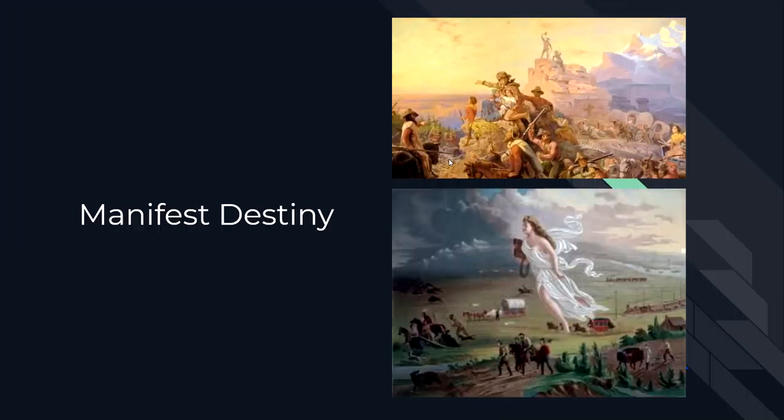Let's start with Manifest Destiny. This is a term that is very popular in the 1840s, and it describes this belief that Americans were destined by God to spread their beliefs across the continent. These are two of the most famous paintings that depict the idea of Manifest Destiny. In the top one, you have all the wagon trains and pioneers moving west to look for unseen or unfamiliar lands. And in the bottom, you have Lady Liberty moving towards the west, with all these trains and settlers moving west as well.